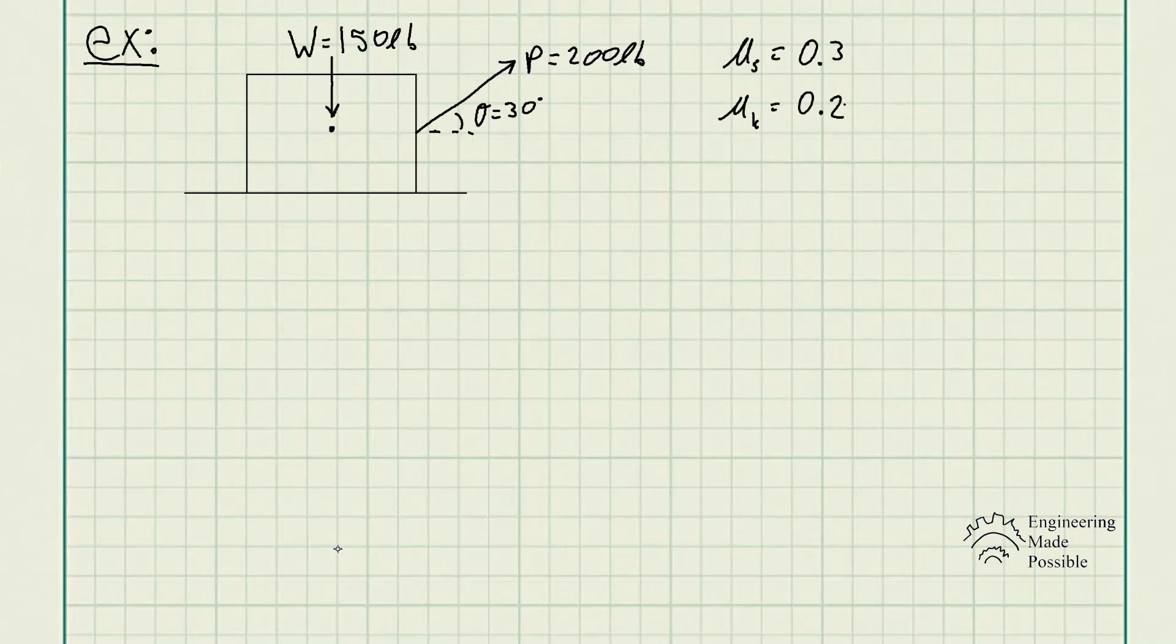We're given the coefficients of static and kinetic friction as 0.3 and 0.2. Remember, when we have a box or any object, we represent the weight at the center of mass. In this case, it's 150 pounds directed downward.